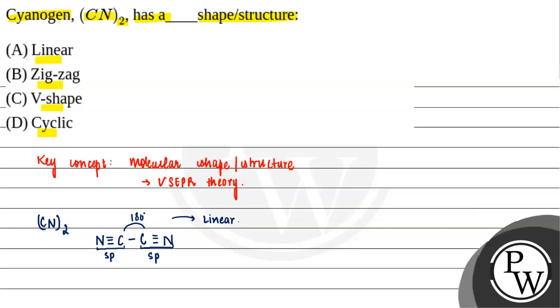We can see that in cyanogen there is no lone pair on the central atom, and there is a bond angle of 180 degrees in the bonded atoms. Hence, it will form a linear shape. So our option A, linear, will be the answer.